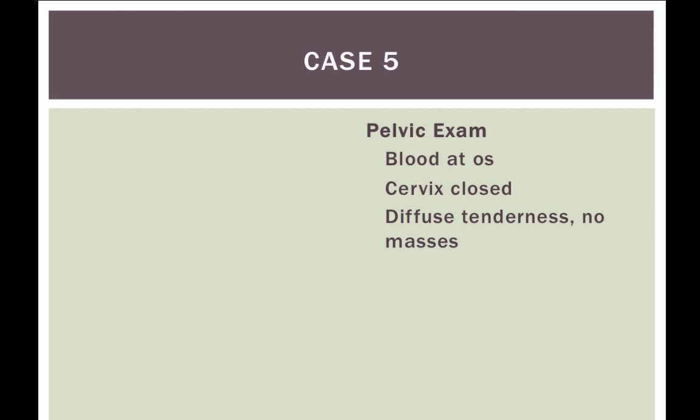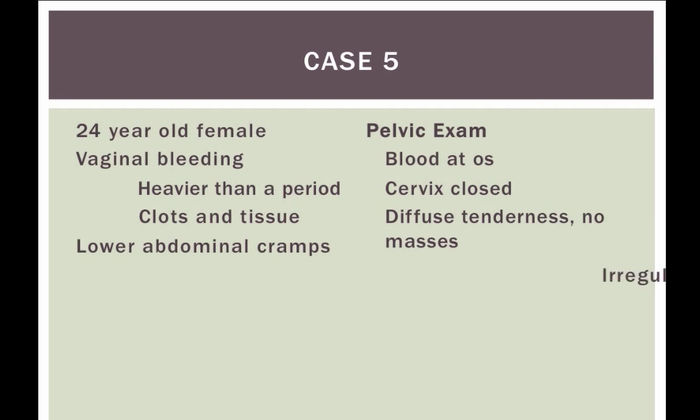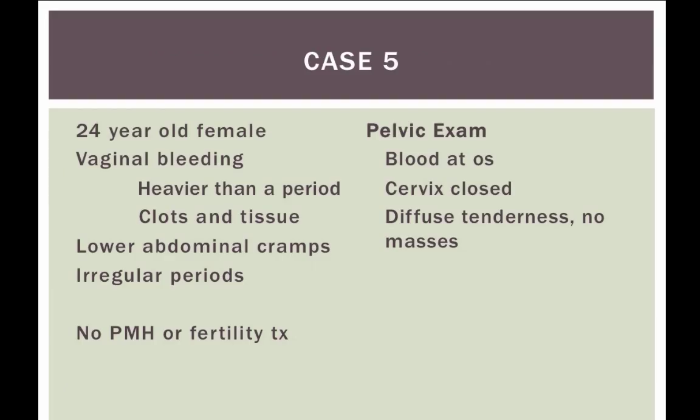Moving right along to the next case. Things are a little different here. 24-year-old female with vaginal bleeding, heavier than usual period. Now there's clots and tissue passing, lower abdominal cramps, irregular periods, and the rest is about the same. We do see some blood at the os. Everything else is the same except we have this increased bleeding - more than a period - clots and tissue.